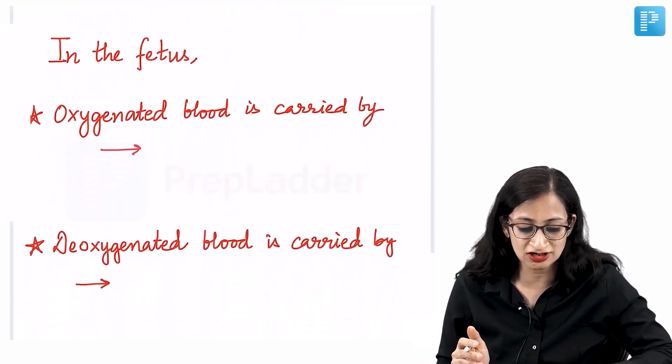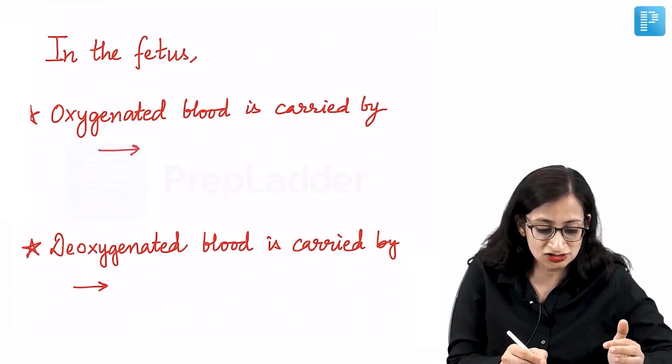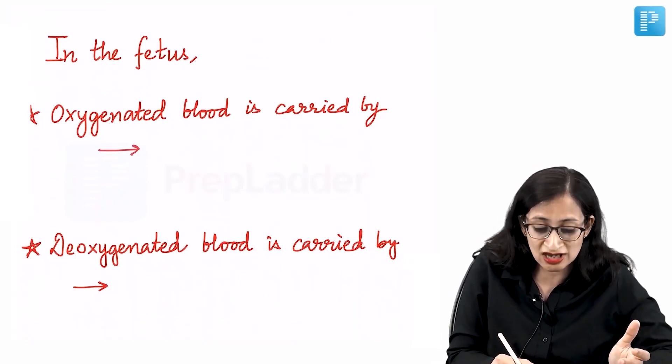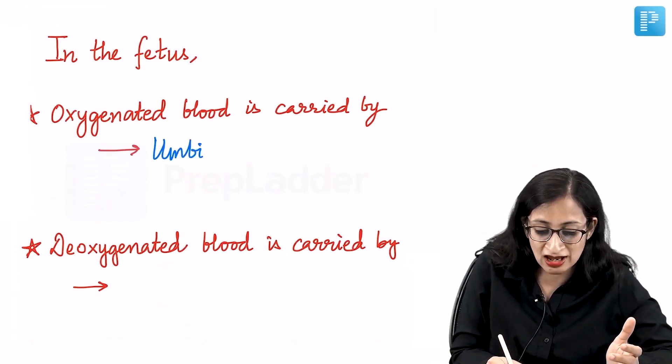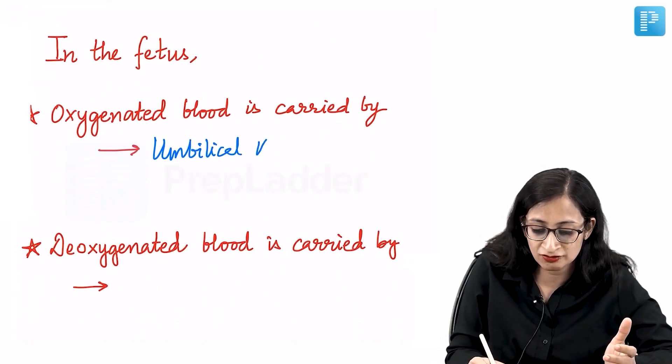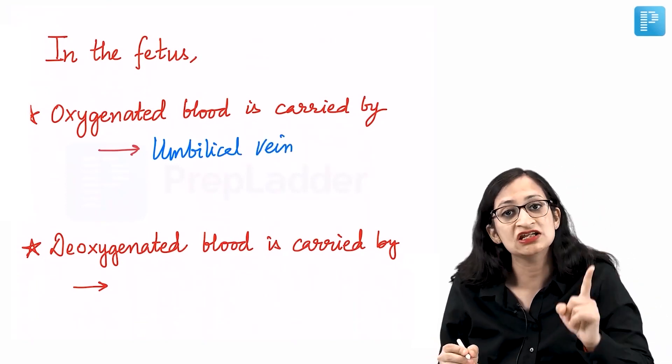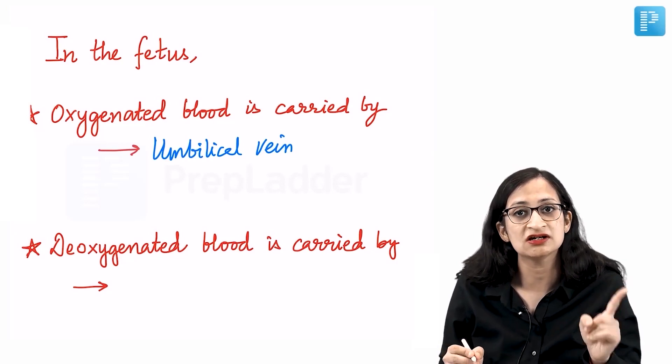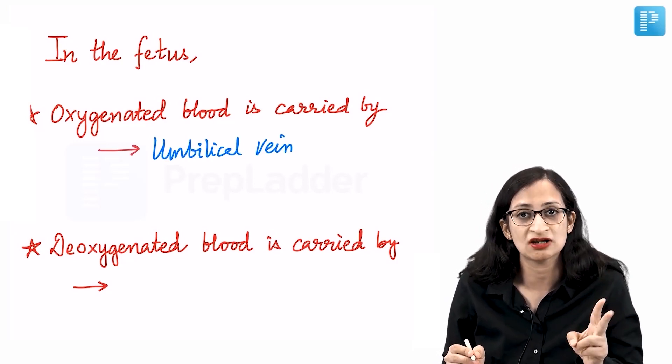In the fetus, oxygenated blood is carried by the umbilical vein and not the umbilical artery. Remember, the vein is one. The umbilical cord normally contains one umbilical vein and two umbilical arteries.